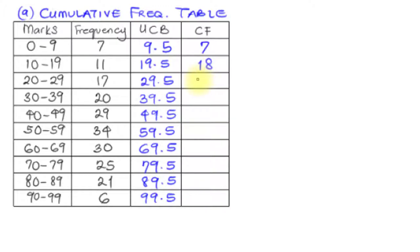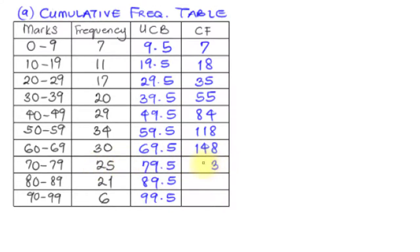18 plus 17 is 35. Then we have 35 plus 20, that will be 55. 55 plus 29 is 84. 84 plus 34 gives 118. 118 plus 30 gives 148. 148 plus 25 gives 173. 173 plus 21 gives 194. And 194 plus 6 gives 200. Now that we've got the final cumulative frequency as 200, you need to check: add each frequency entry together using the calculator. The sum of all frequencies must equal this final cumulative frequency.